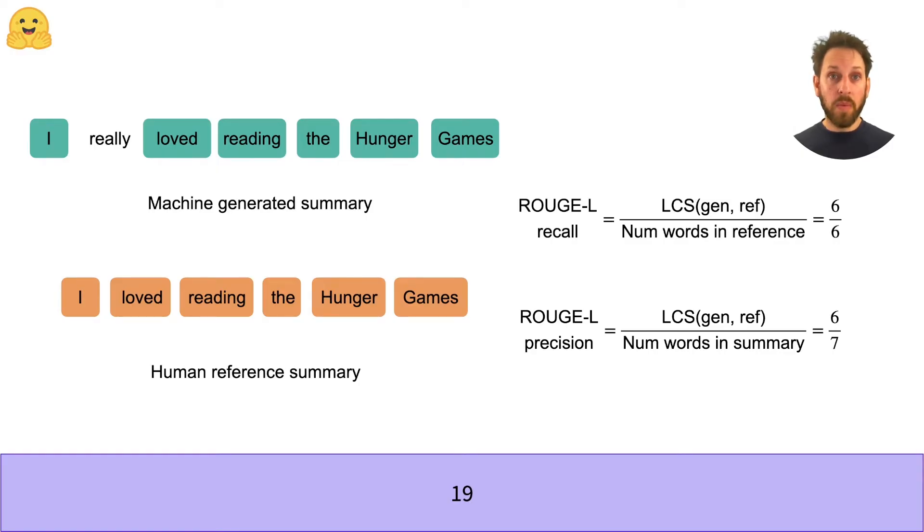So in this example, I loved reading The Hunger Games is the longest common subsequence between the two summaries. And the main advantage of ROUGE-L over ROUGE-1 or ROUGE-2 is that it doesn't depend on consecutive n-gram matches, and so it tends to capture sentence structure much more accurately.